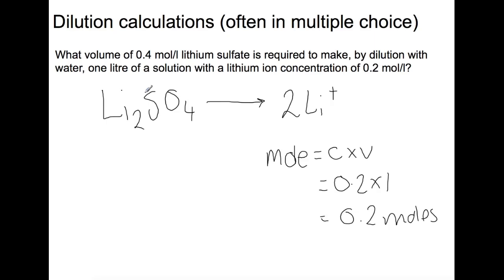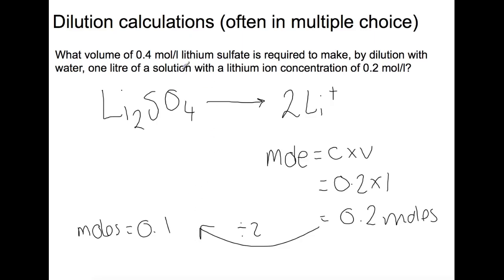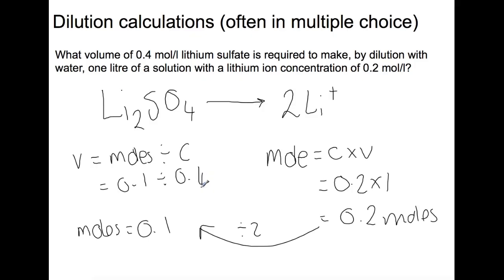For every mole of lithium sulfate you get two moles of lithium ions, so we need to divide by two to work out how many moles of lithium sulfate we would require. This is 0.1 moles. We have the concentration of lithium sulfate that's available, so we rearrange the equation to calculate volume: moles divided by concentration. This gives us 0.25 litres, which is the same as 250 millilitres of solution.